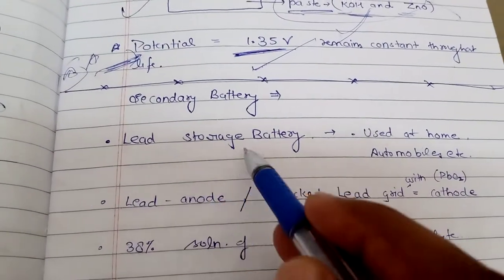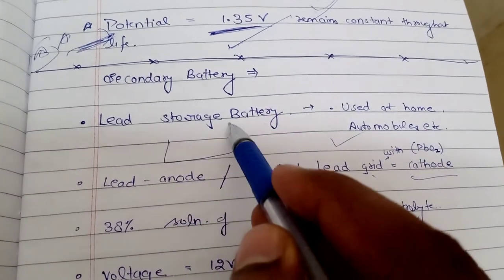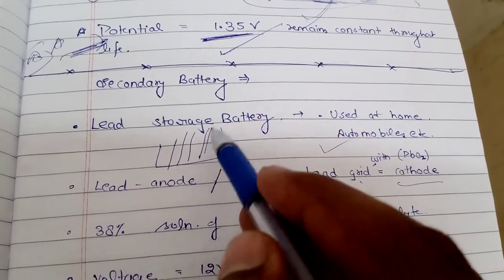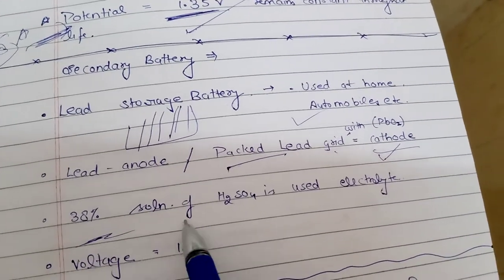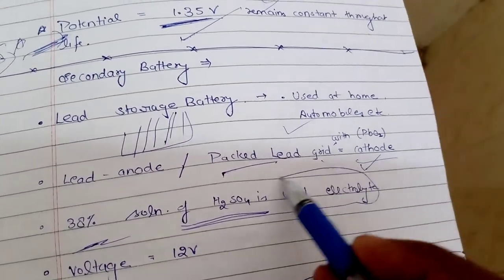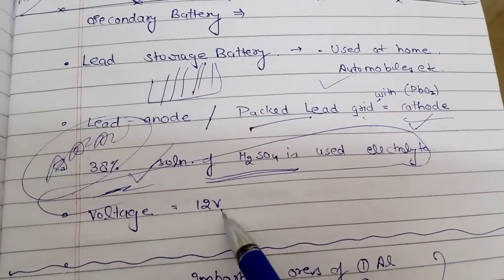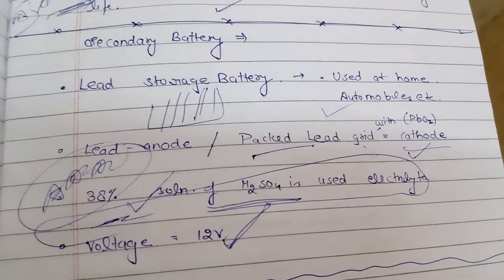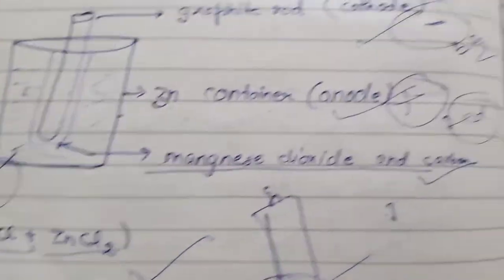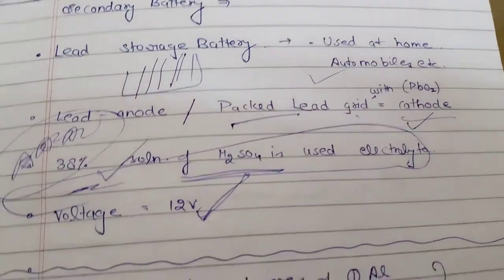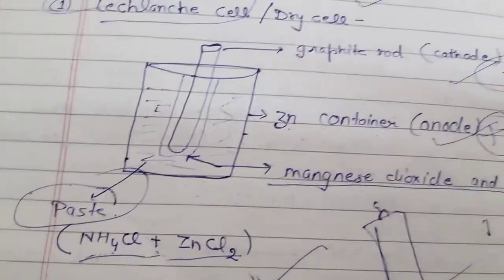The secondary battery - lead storage battery - is used at home and in automobiles. It has a lead anode packed in a lead grid, with PbO2 as the cathode. A 38% solution of H2SO4 is used as the electrolyte - this is important and will be asked in exams. This battery gives 12 volts. Summary: primary batteries include Leclanche cell (1.5V) and mercury cell (1.35V); secondary battery lead storage uses 38% H2SO4 solution at 12 volts.